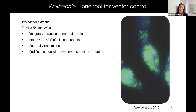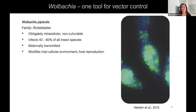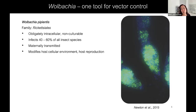Wolbachia are maternally transmitted. Here I'm showing a fluorescent micrograph of Wolbachia infecting the germarium of Drosophila melanogaster — this is the very earliest stage of oogenesis where the egg is being formed. Every one of these little green puncta is a Wolbachia cell, so this is a heavily infected tissue. If you dissected infected and uninfected flies' ovaries, you'd see no morphological defects, really highlighting the fact that Wolbachia have figured out clever strategies to control cell biology and ensure their maternal transmission.